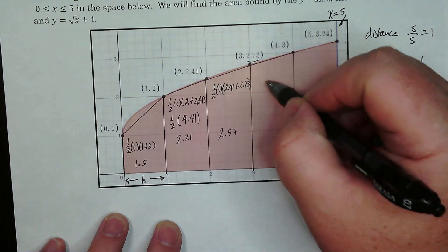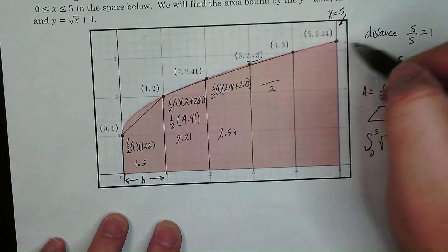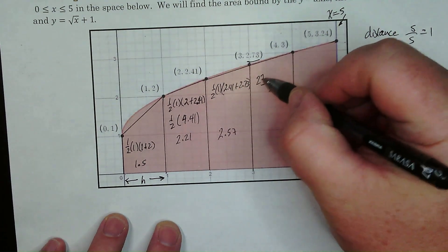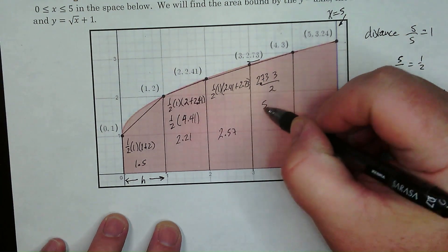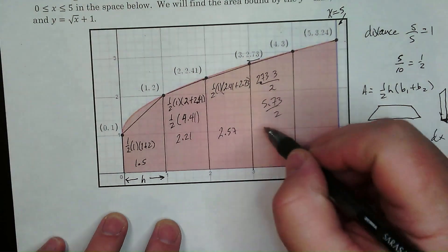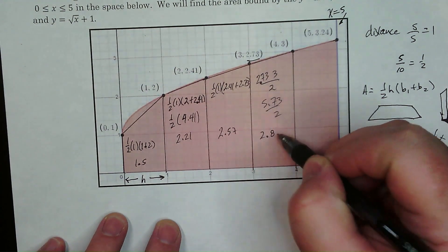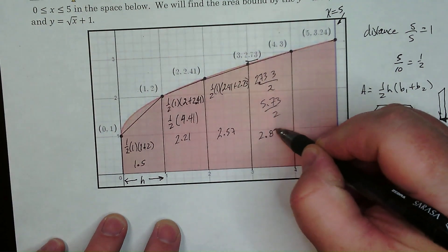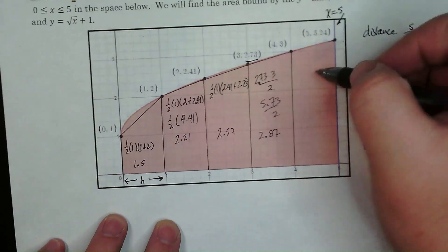So now I'm just going to go ahead and do it like this. Save a little time. So we have 2.73 plus 3. So 5.73 divided by 2. So we got 2.8. It says 865. So that would be 2.87. And then the last one.